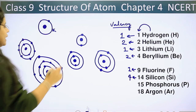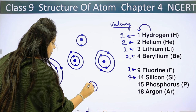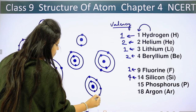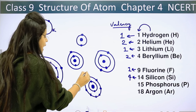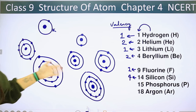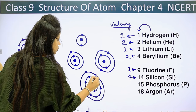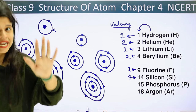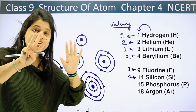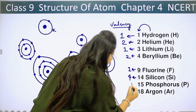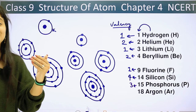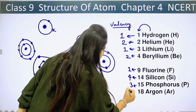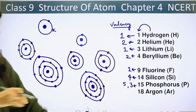Phosphorus has atomic number 15. In the first shell, we put 2; in the second shell, we put 8: 1, 2, 3, 4, 5, 6, 7, 8. Then in the third shell we place 5 electrons: 1, 2, 3, 4, 5. There are 5 electrons in the outermost shell. To complete it, phosphorus would need to gain 3 electrons — so the valence is 3. But in many cases it may lose 5 electrons instead, making the valence 5. So phosphorus can have valence 5 or 3, and either is correct.